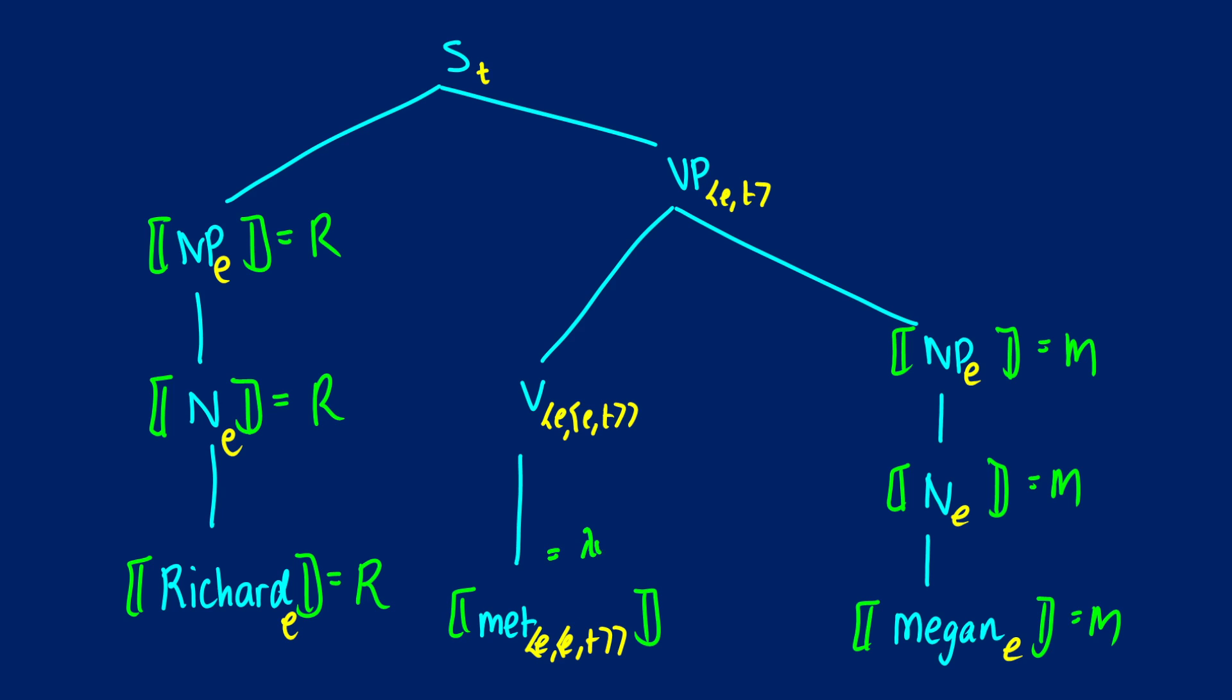So in terms of met we saw how to do this. I'm going to put this right here. This will be lambda y dot lambda x dot x met y. So again we're doing lambda y first because we're picking up the object first. Now this meaning is going to be the same for the verb above it because we have that pass up rule. It's just a non-branching node. So now for the VP this is where we're going to do our function application.